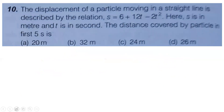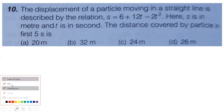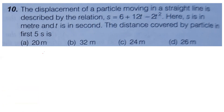Tenth question: the displacement of a particle moving in a straight line is described by s equals 6 plus 12t minus 2t squared (s in meters, t in seconds). Find the distance covered by the particle in the first five seconds.